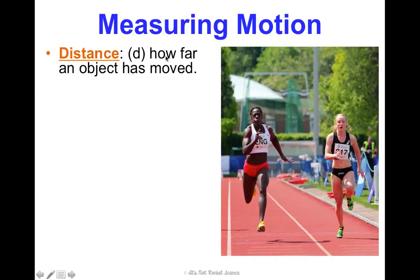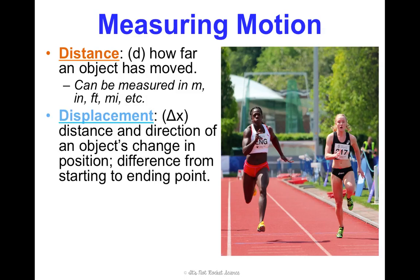Distance is abbreviated in an equation as a little d, and it's a measure of how far an object has moved. It can be measured in a variety of units, and so can displacement. Displacement though is abbreviated as delta x, meaning change in x. So displacement is referring to distance and direction of an object's change in position, or you could say it's a difference from where we started to where we ended.